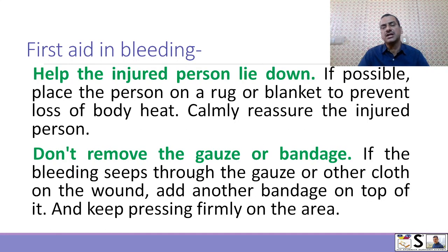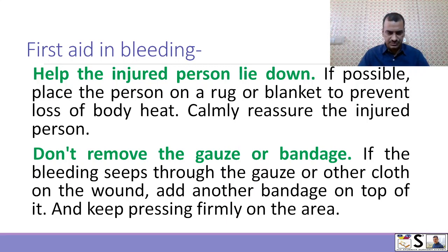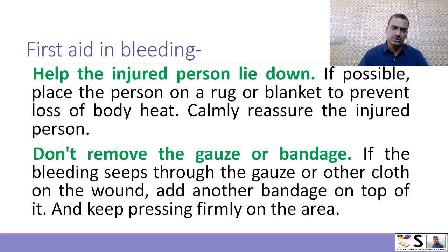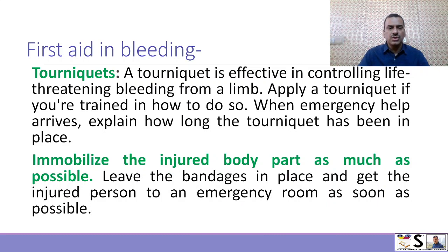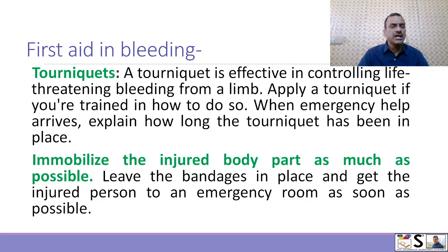If possible, raise an injured limb above the level of the heart. Help the injured person lie down calmly. If possible, place the person on a rug or blanket to prevent loss of body heat. Calmly reassure the injured person. Don't remove gauze or bandage — if bleeding seeps through, add another bandage on top and keep pressing firmly. You can use a tourniquet, which is effective in controlling life-threatening bleeding from a limb. Apply a tourniquet if you are trained to do so, and when emergency help arrives, explain how long the tourniquet has been in place.